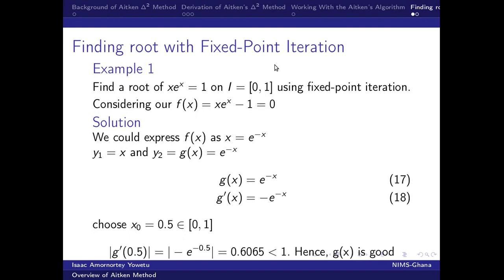And with the initial guess, you can guess any number within this interval. It can be 0.2, 0.5, 0.6, but I choose 0.5 within this interval. And then, finding the derivative with respect to the initial guess, the absolute of it gives us a number which is less than 1. So hence, the g of x is a good choice. When it's greater than 1, then there is a need for us to generate another g of x from this f of x.